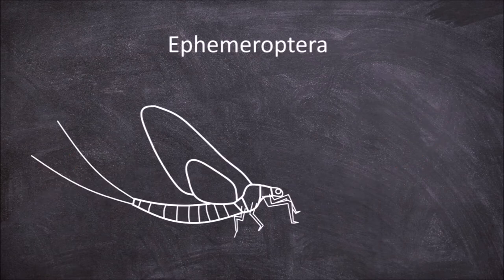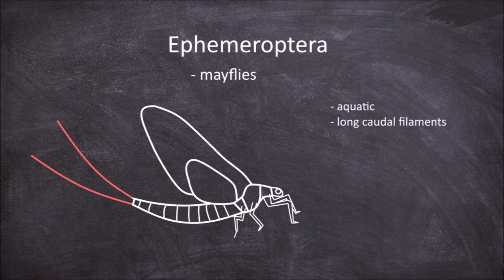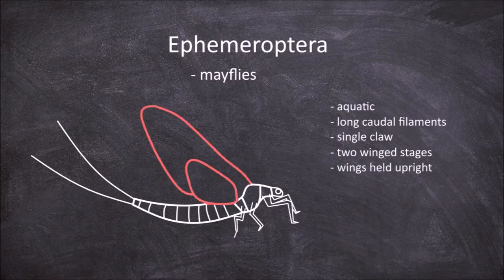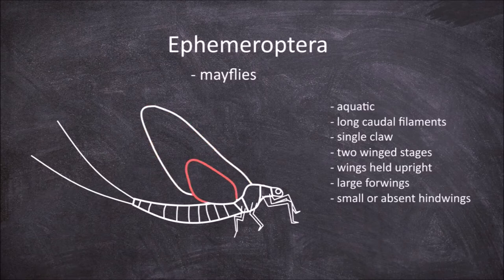The next order is the Ephemeroptera, commonly known as the mayflies. Members of this order are aquatic and are characterized by having long caudal filaments at the tip of the abdomen. They also have a single claw on each leg. They have two terrestrial wing stages — the sub-imago stage and the final sexually mature imago stage — in which wings cannot be folded over the abdomen and are instead held upright over their backs. They possess one large forewing and the second set of wings are either absent or much smaller in size.